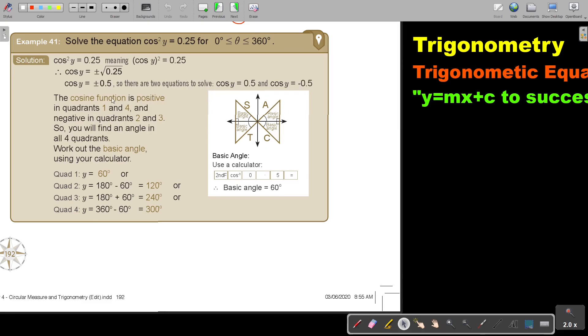So it's actually the whole cosine diagram. The cosine function is positive in quadrants 1 and 4 and negative in quadrants 2 and 3. So you will find an angle in all four quadrants. Work out the basic angle using your calculator, and I get 60. Then I just work 60, 180 minus 60, 180 plus 60, 360 minus 60, and there are all four answers.